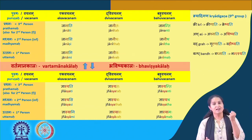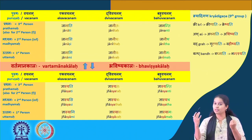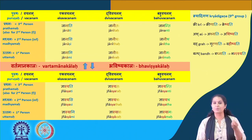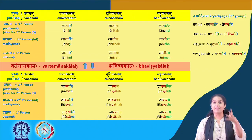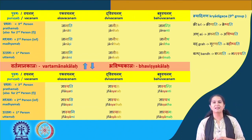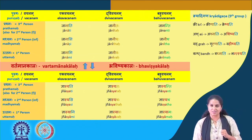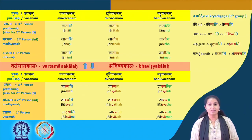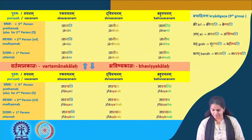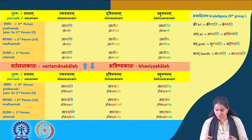Grah means 'to capture', 'to grasp' — you hear it in the English word 'grasp' as well: grah, grasp. It is also the word for 'planet' — grah — and therefore connected to the word 'gravity'. You hear these similarities in the sounds of these words. Grah is that which attracts, and therefore the planets were known as graha.